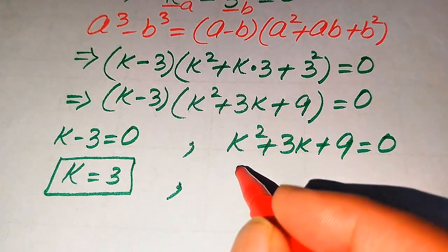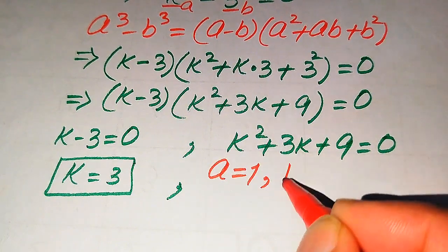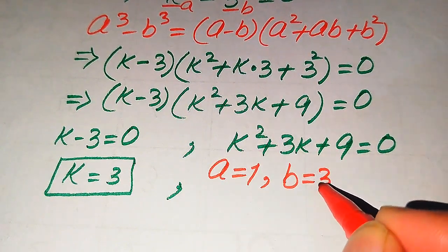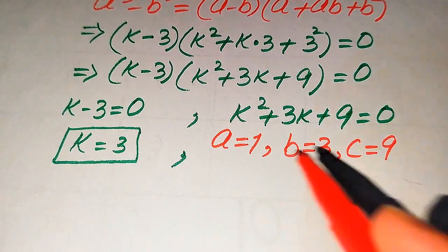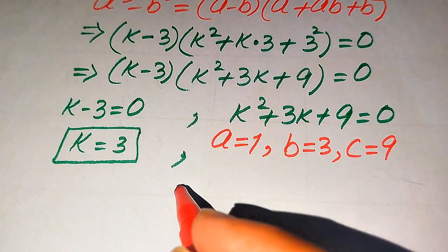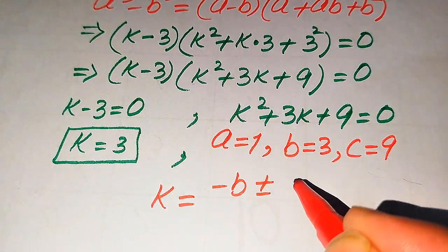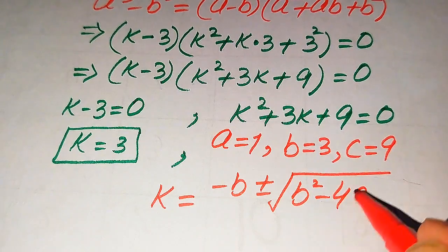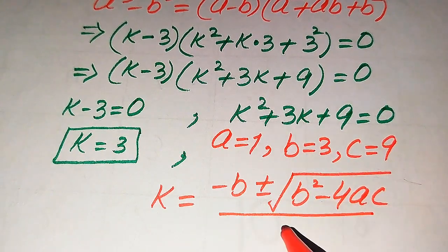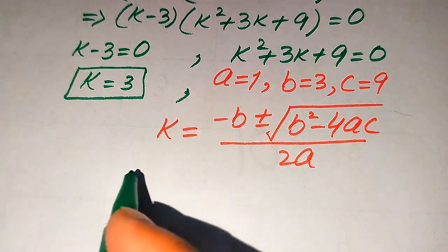First we identify the coefficients of the quadratic equation: a equals 1, b equals 3, and c equals 9. The quadratic formula is k equals (minus b plus or minus the square root of b squared minus 4ac) divided by 2a.